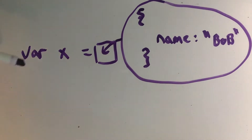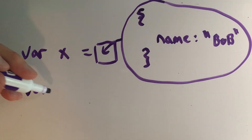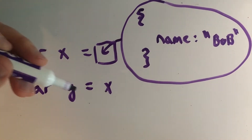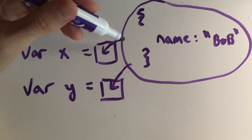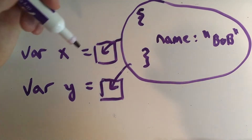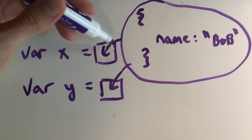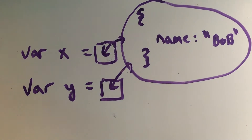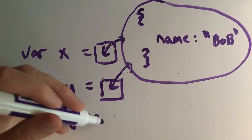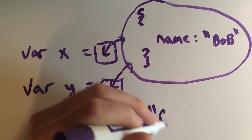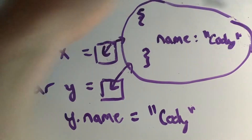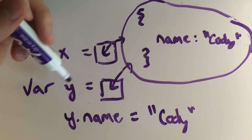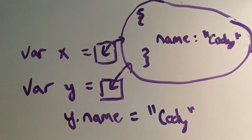We'll demonstrate that further using two different variables. Let's declare another variable called Y and set it equal to X. What really happens is that it's going to point Y to the same object that X is pointing to — notice how they both have arrows meaning they both have a reference to the same object. To demonstrate this, we can overwrite Y.name equal to 'Cody', and what this does is update the name property on that shared object so that both X.name and Y.name are equal to the same value. Both variables point to the same object, which means when you edit the object on either variable you're updating the same object.